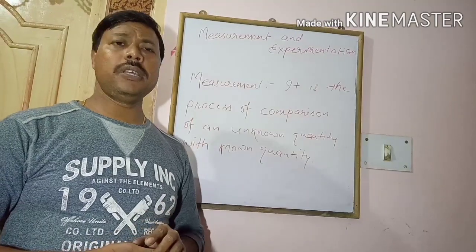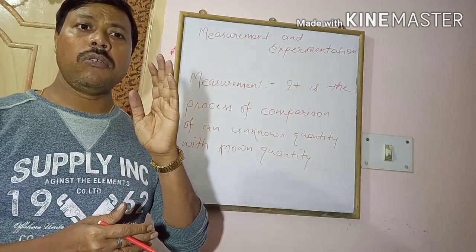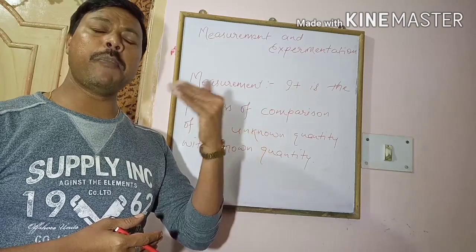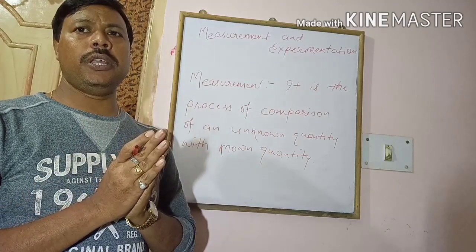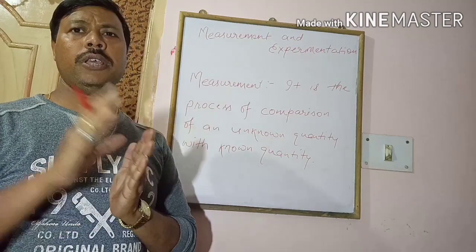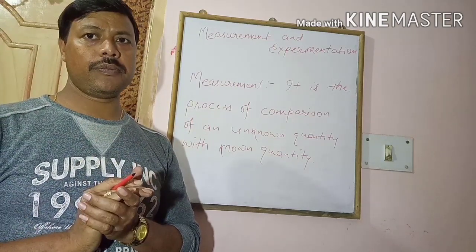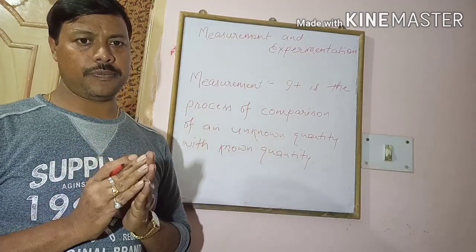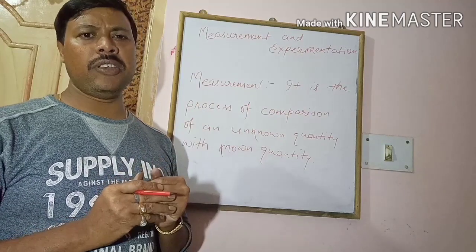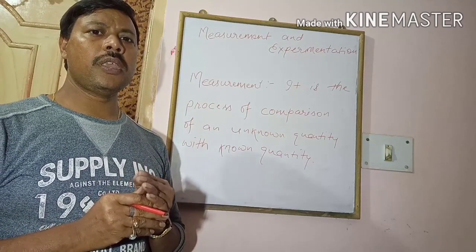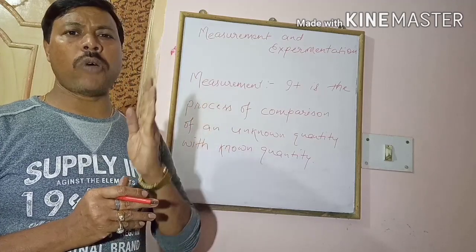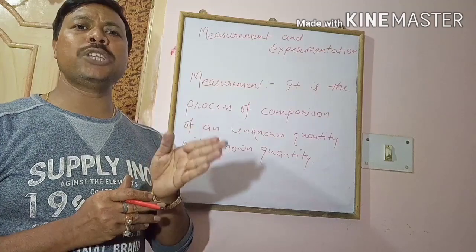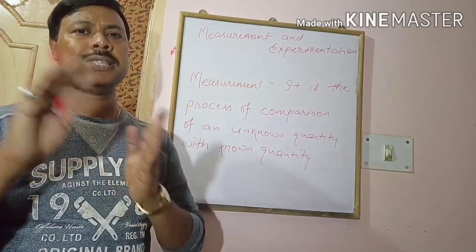Measurement is the process of comparison of an unknown quantity with a known quantity. The known quantity is considered as the unit. We can define unit as the magnitude of a constant quantity which is used to measure the magnitudes of other quantities of the same nature.